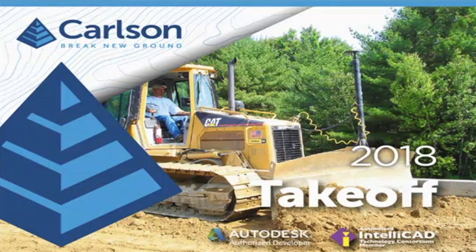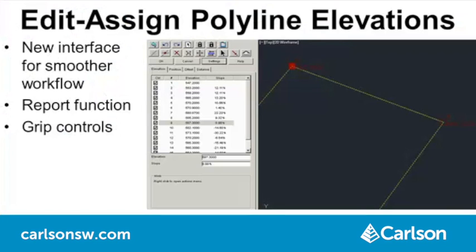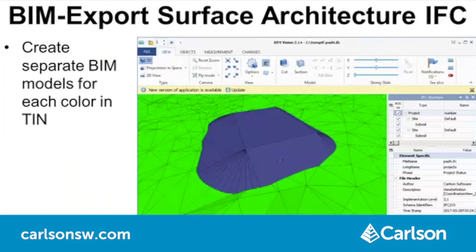In Carlson Takeoff, Edit Assign Polyline had a major overhaul and now has a new interface for smoother workflow. There are new features including a report function and controls for the grip and label sizes. In CADNET, the export TIN to IFC now supports TINs with different colors by making separate IFC models for each color, so you can have a different BIM model for different areas of the surface.